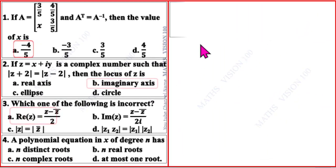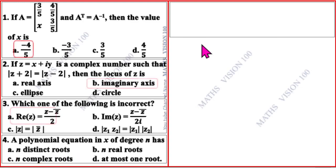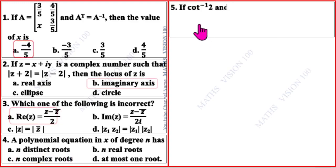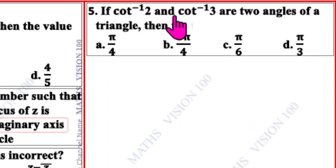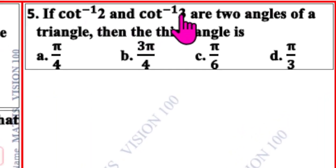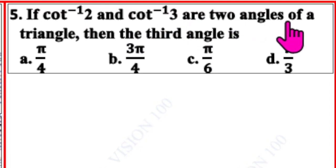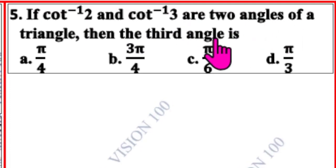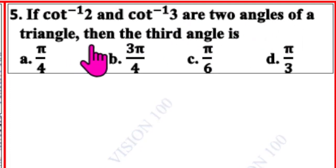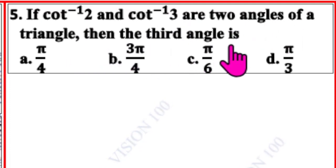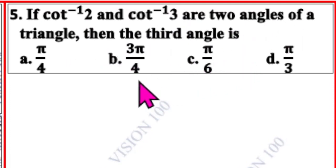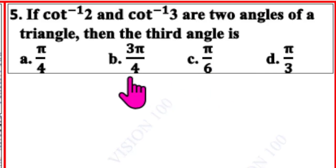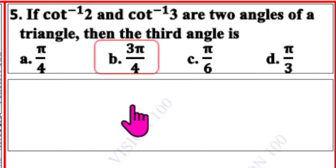Fifth question. If cot inverse of 2 and cot inverse of 3 are the two angles of a triangle, then the third angle of the triangle is — correct option is B: 3π/4.